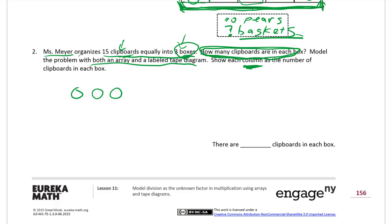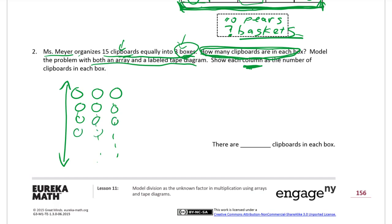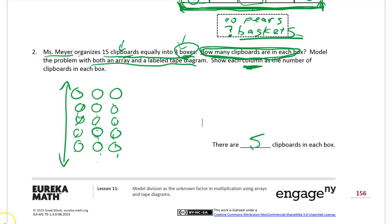Our array will have three columns — columns go up and down. So here's one column, here's another, here's another: three columns. Counting the clipboards: three, six, nine... that tells us there are five clipboards in each box.